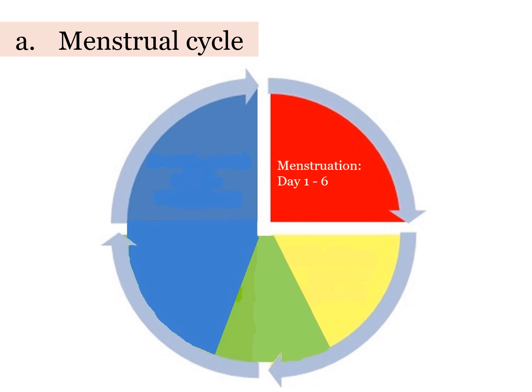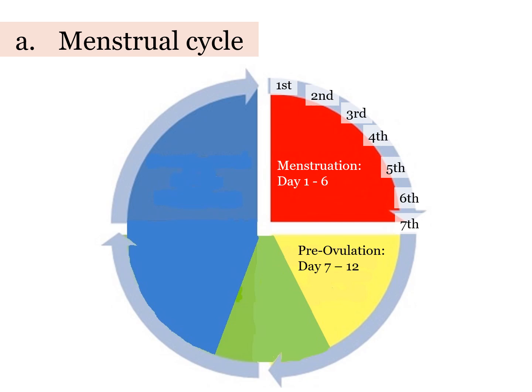Firstly, the menstruation phase. The first day a woman has her monthly menstrual flow is regarded as day 1 in her menstrual cycle. The tracking continues with day 2, 3, 4, and so on. Menstruation usually lasts for 5–7 days or even longer. Subsequently, in day 7–12, the next phase will follow, which is the pre-ovulation phase. During this phase, the bleeding may have already stopped.